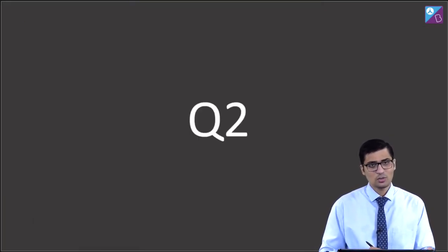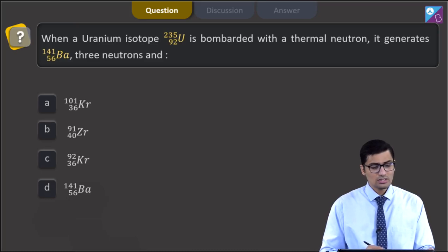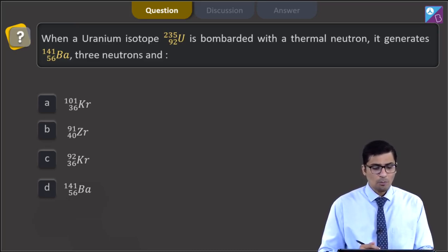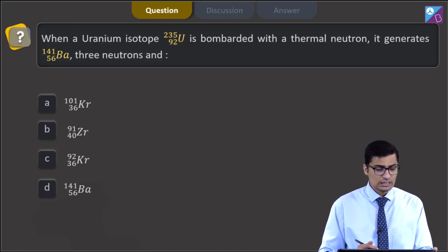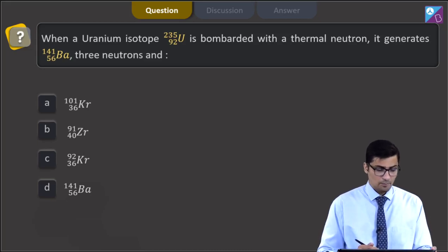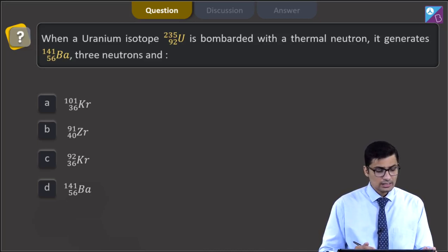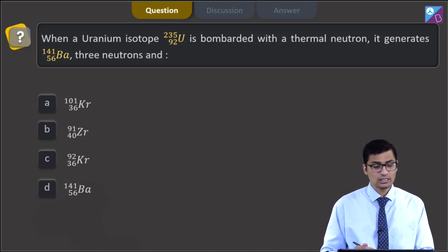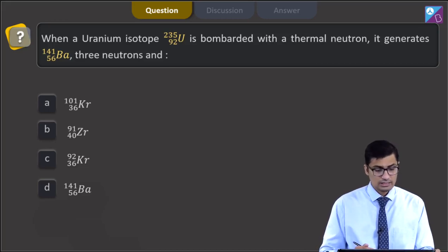This is question 2. When a uranium isotope ²³⁵U₉₂ is bombarded with a thermal neutron, it generates ¹⁴⁴Ba₅₆, 3 neutrons, and — from the four options — either 101 Kr₃₆, 91 Zr₄₀, 92 Kr₃₆, or 141 Ba₅₆.